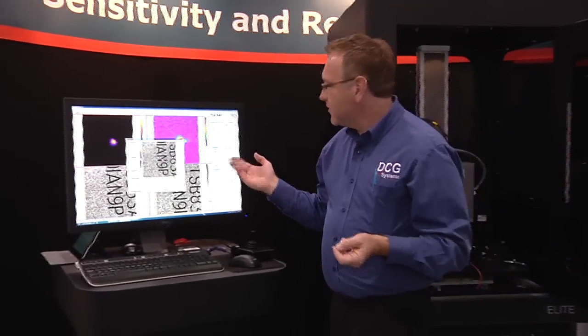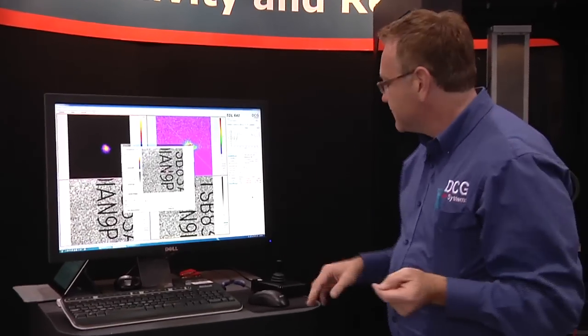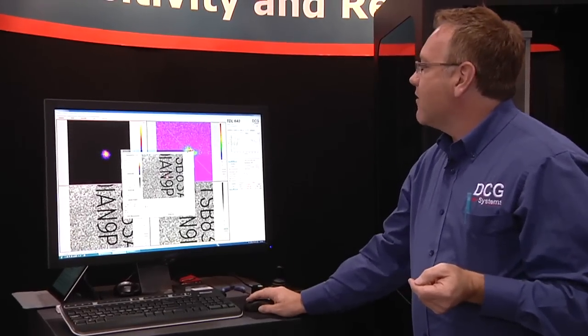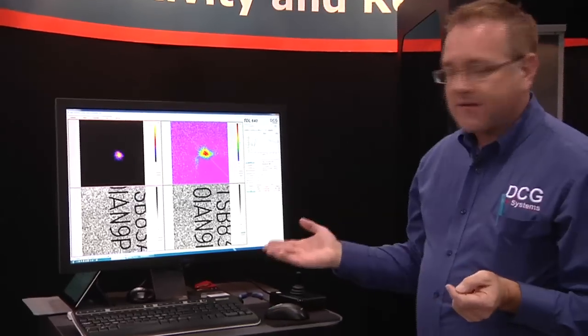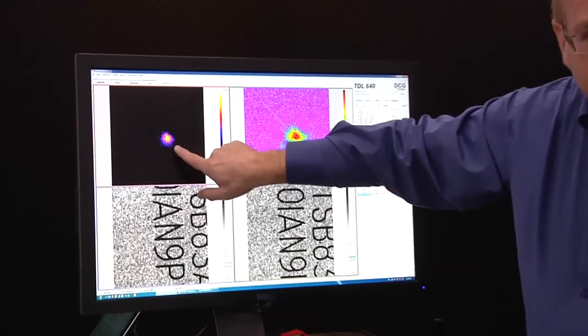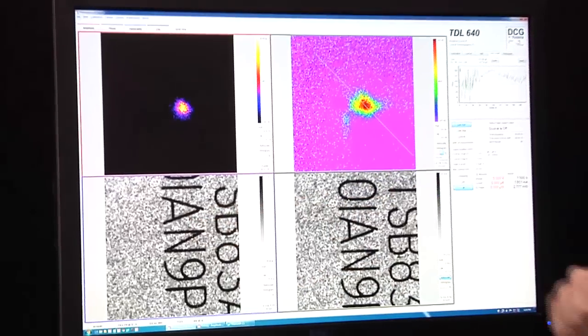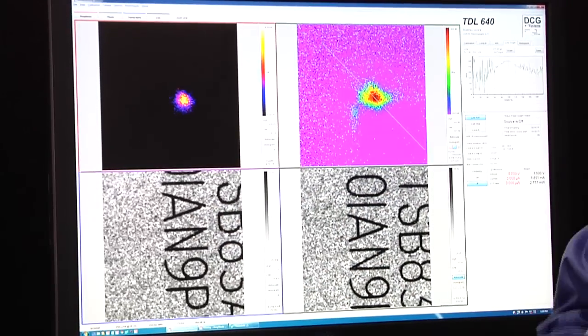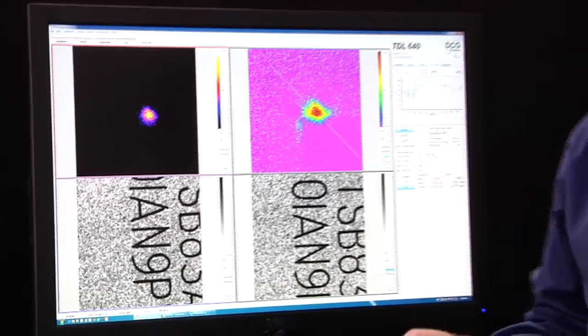Over here is an example of what the software will look like. It's basically laid out in a quadrant type of format where we have four images displayed. One for the amplitude we discussed, phase information, and topography. Topography can be thought of as like a video image, but it's all done in the infrared.